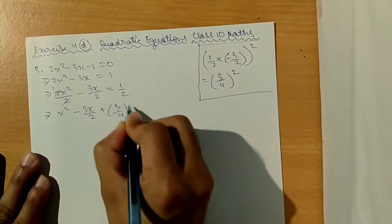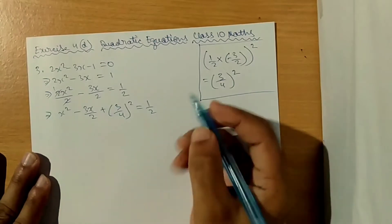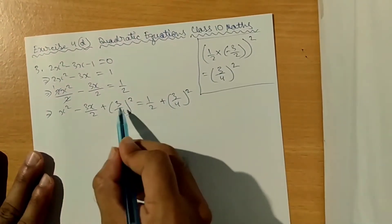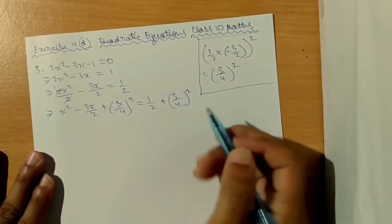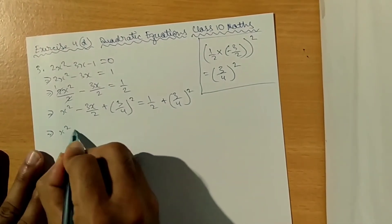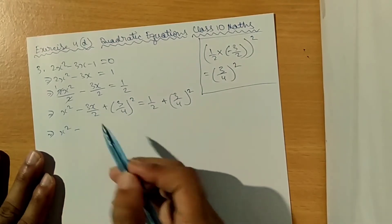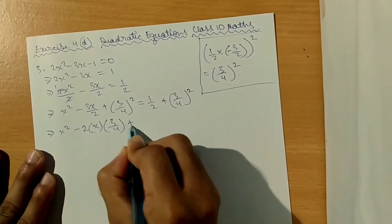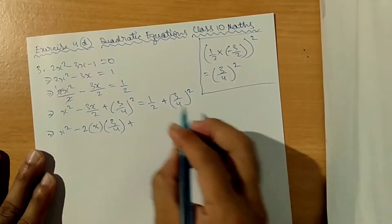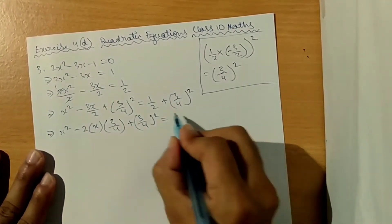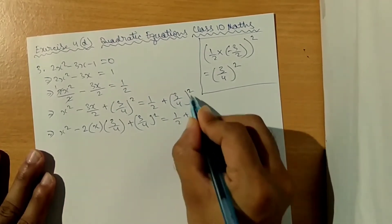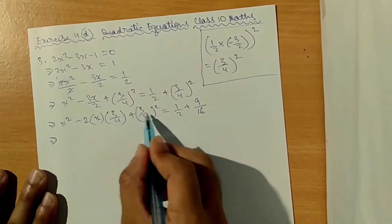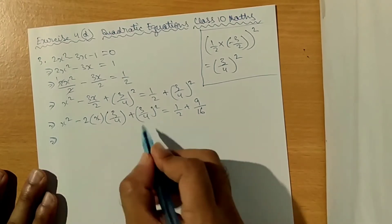So 3 by 4 squared. This is equal to 1 by 2, and we add 3 by 4 squared to both sides. On the left-hand side plus 3 by 4 squared, right-hand side plus 3 by 4 squared. This implies x squared minus 2ab plus b squared — the formula a squared minus 2ab plus b squared. So x squared minus 2 into x into 3 by 4, plus 3 by 4 squared, equals 1 by 2 plus 9 by 16.